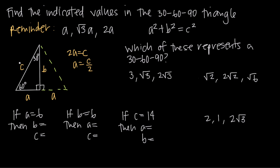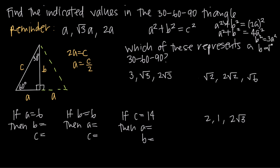We know that C is equal to 2A, so if we substitute into the Pythagorean theorem, A² + B² = (2A)², which simplifies to A² + B² = 4A². Subtracting A² from both sides gives B² = 3A². Taking the square root of both sides, we get B = √3 · A. In other words, we just take the length of the shortest side and multiply it by the square root of 3, and that gives us the length of the longer leg, B.